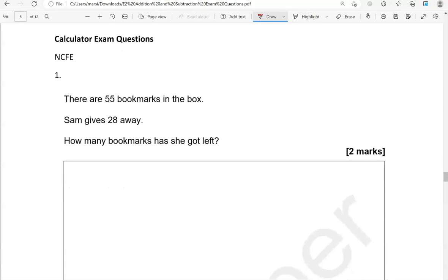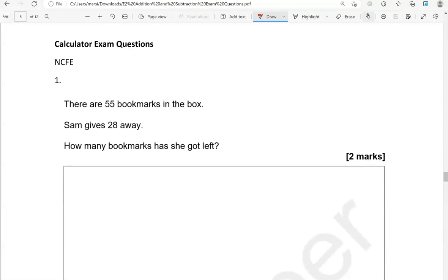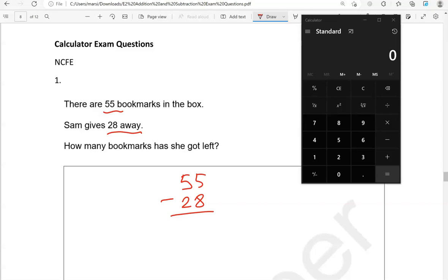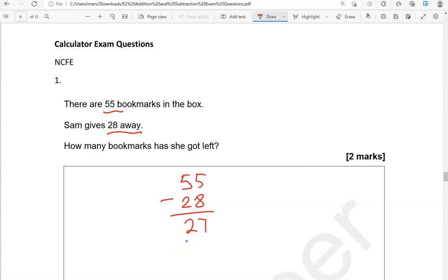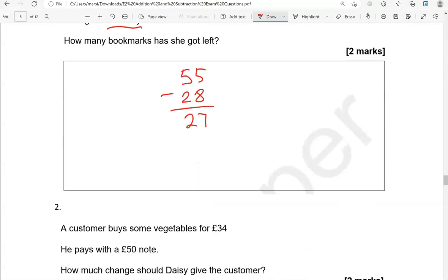From now on we can use the calculator. There are 55 bookmarks in the box. Sam gives 28 away. So to give away that means to subtract. How many bookmarks has she got left? So we're going to do 55 take away 28. Using a calculator we'll go 55 take away 28, gives us 27. So 27 bookmarks are left.